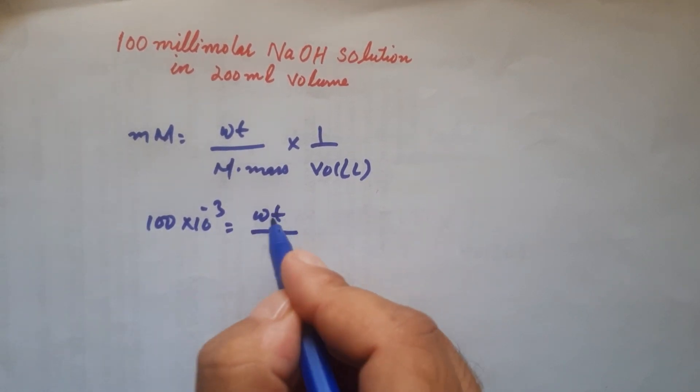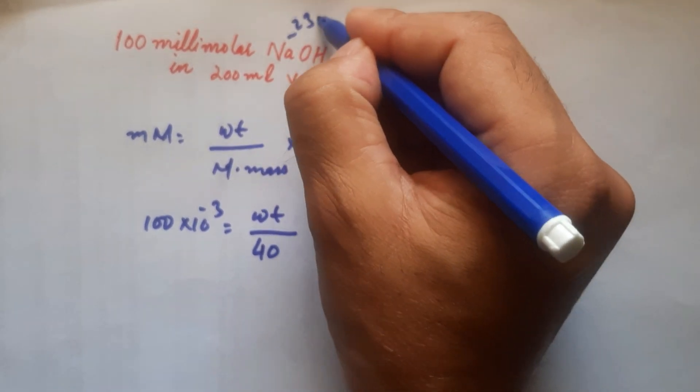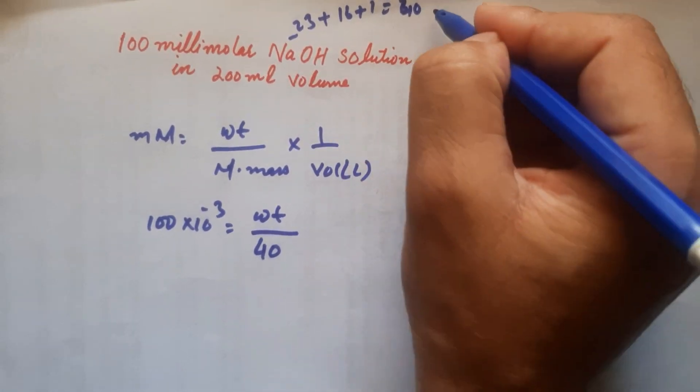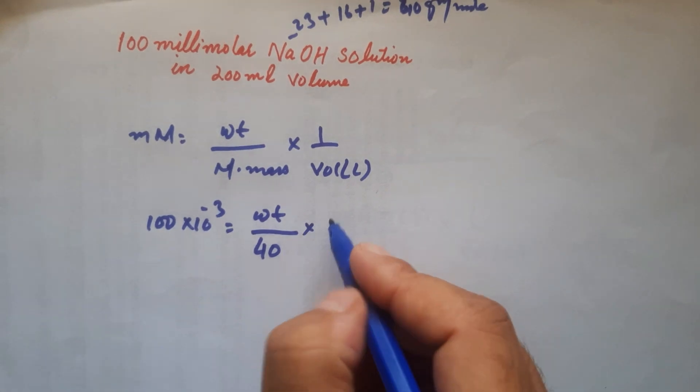The molar mass of sodium hydroxide is 40. You can check it out: sodium 23 plus oxygen 16 plus hydrogen 1, and this comes out to be 40 grams per mole.